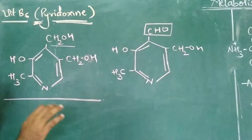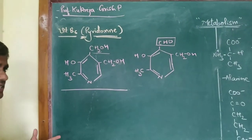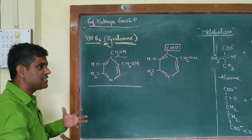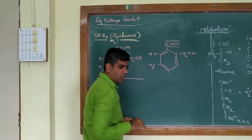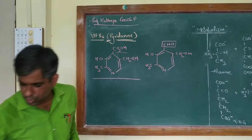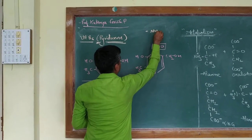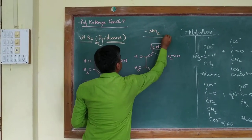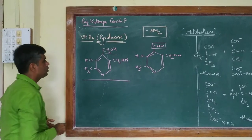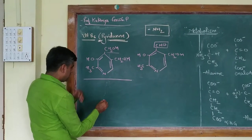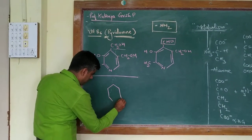Pyridoxine also gets converted into a typical coenzyme form, and then it acts as the carrier for different groups. Pyridoxine basically serves as a carrier of the amino group. The group which this vitamin is going to carry is the amino group. After accepting that group, it gets converted into pyridoxamine.